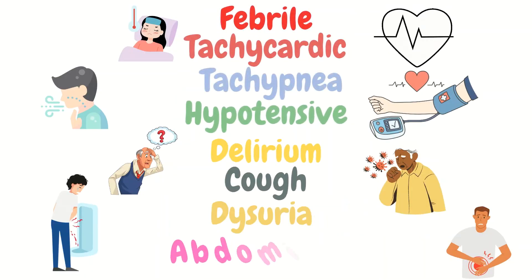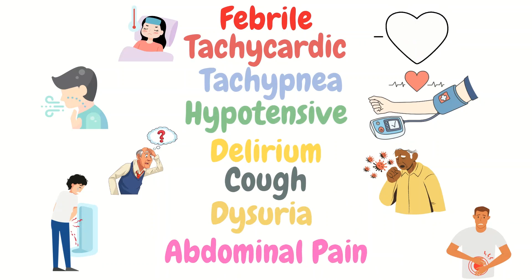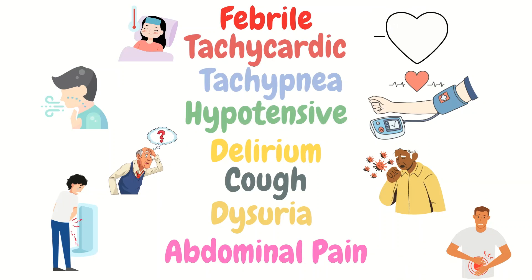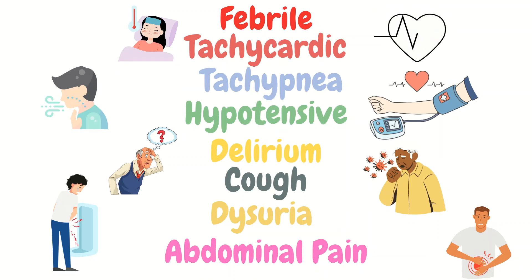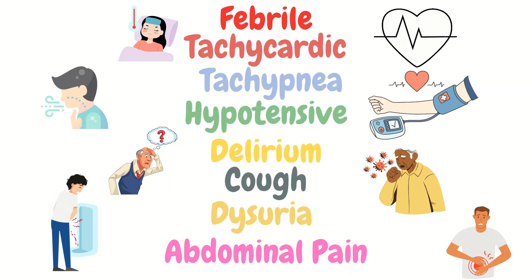Specific symptoms that may indicate an infection include being febrile, tachycardic, tachypneic, and so forth. These do not automatically mean the patient has an infection; however, they can help guide the evaluation. For example, if the patient is febrile, tachycardic, has abdominal pain, and green stools, it can help point the team in the right direction regarding the workup.